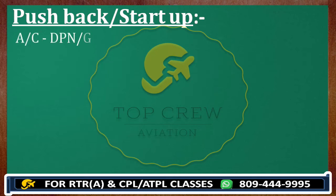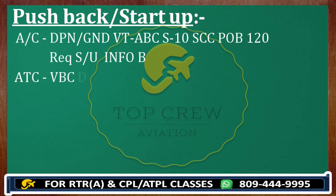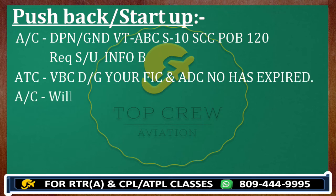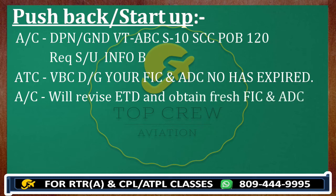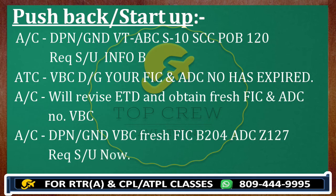Let's make one more call with FIC and ADC. Delhi Ground, Victor Tango Alpha Bravo Charlie, stand 1-0, security check carried out, persons on board 1-2-0, request startup info Bravo. Victor Bravo Charlie, Delhi Ground — FIC and ADC number has expired. You revert: will revise ETD and obtain fresh FIC and ADC number. Once you have the fresh numbers, call back: Delhi Ground, Victor Bravo Charlie, fresh FIC Bravo 204, ADC number Zulu 127, request startup now. This is the complete call if ATC objects about your FIC and ADC number.